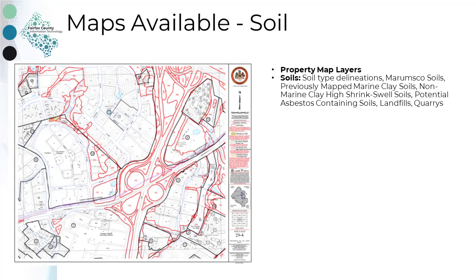The soil map provides delineation of different soil types across the county and includes all the property map layers. The current 2018 map series was prepared by the Fairfax County GIS and Mapping Services Division. Historical soil maps include 2011 and 1990. The 2011 map series was prepared by the United States Department of Agriculture Natural Resources Conservation Service and was officially adopted by the Fairfax County Board of Supervisors in 2011. The 1990 map series was prepared by the Northern Virginia Soil and Water Conservation District.